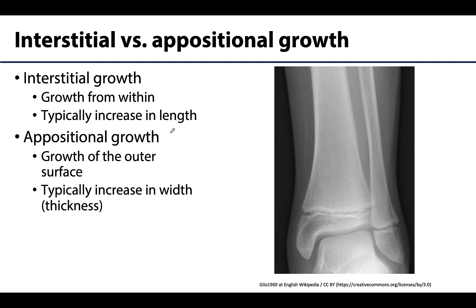We've mentioned these in a few earlier videos, so let's talk about the difference between interstitial and appositional growth. Interstitial growth literally means growth from within. This is the dominant process in bone growth in terms of length. What allows this to occur are the epiphyseal plates, which are actually made out of hyaline cartilage. It's the growth of that cartilage that is very important in terms of interstitial growth. Eventually it will be replaced by bone via endochondral ossification.